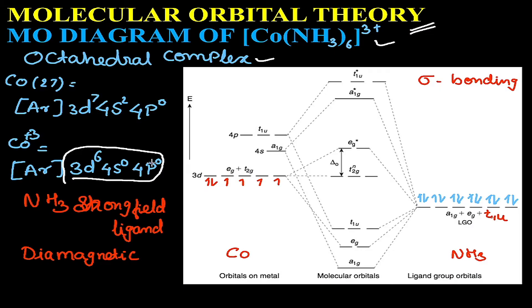In molecular orbital theory, orbitals are represented by their respective Mulliken symbols. The Mulliken symbol for the s orbital is a1g, the p orbital is t1u (a triplet, ungerade). The 3d orbitals split into eg and t2g, where we have doubly degenerate eg and triply degenerate t2g. The ligand group orbitals for ammonia will have the same symmetry: a1g, eg, and t1u.